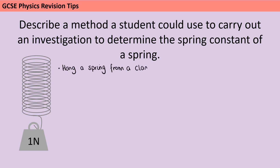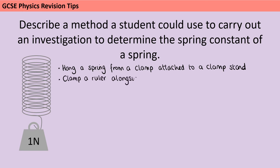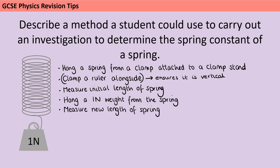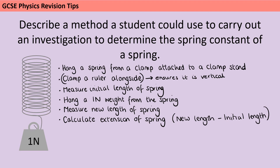To begin with, you would have hung a spring from a clamp attached to a clamp stand, and then you may have clamped a ruler alongside — the reason you would choose to clamp it is that it ensures the ruler is definitely vertical. You're then going to measure the initial length of the spring before you have added any weight to it, and then you're going to hang a one newton weight from that spring. You measure the new length of the spring, and use that together with the initial length to calculate the extension.